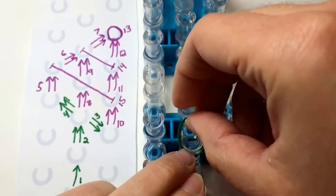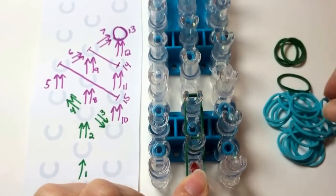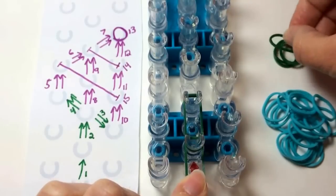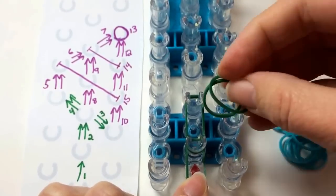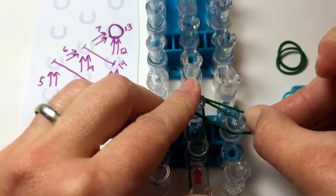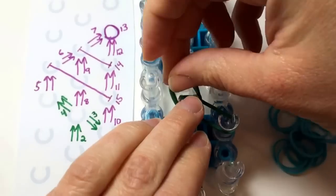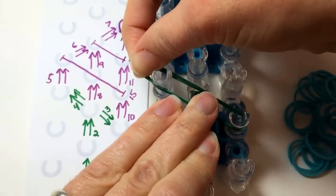Then two green rubber bands going forward again. Then taking two green, we're going to go from the center diagonally down to the right, and from the center diagonally up to the left.